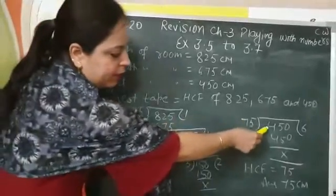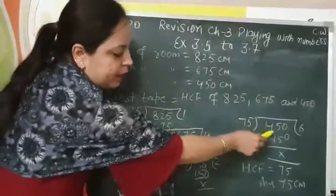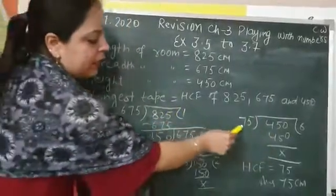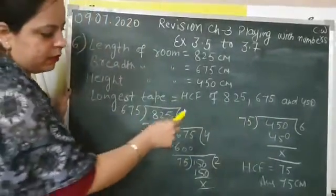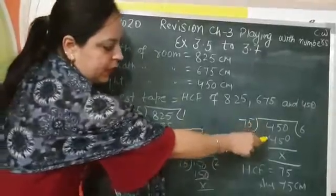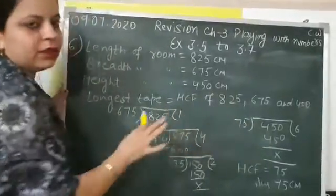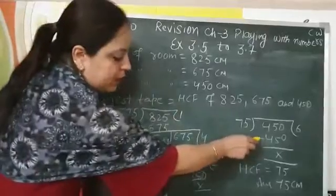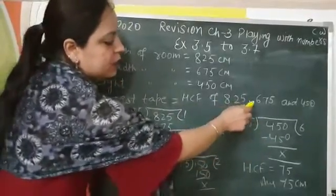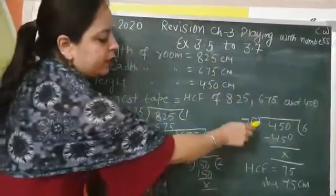And when you divide it by 75, 450. Now it's become your dividend. And 75 is your divisor. At 6, its direct value comes as 450. And remainder is 0. Now student, the HCF of these three numbers, that will be 75.